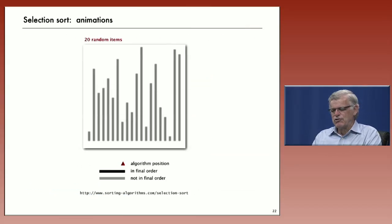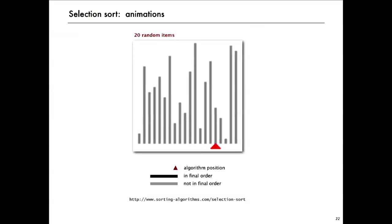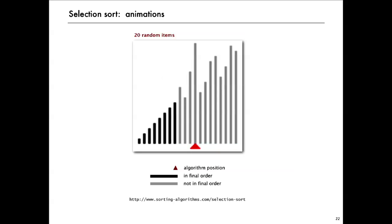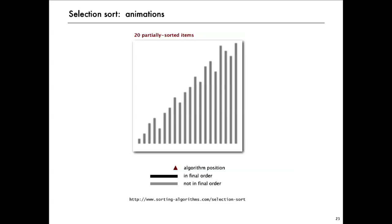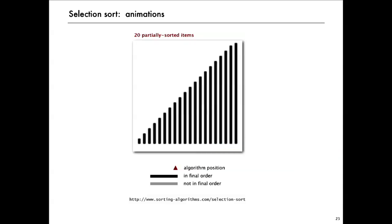Let's look at the animation of selection sort in operation. You can see our pointer moving from right to left. And every time it finds the smallest element to the right, it exchanges it into position. Now, if the array is partially sorted, doesn't matter to selection sort. It still has to go through, even if it's totally sorted, it still has to go through to decide where that minimum element is. That's selection sort, our first elementary sorting method.